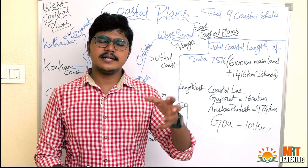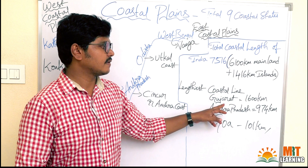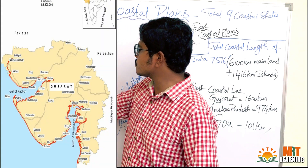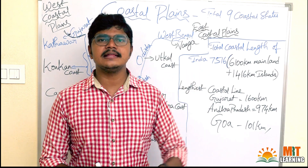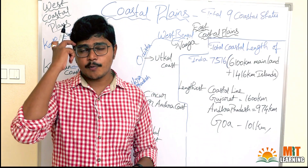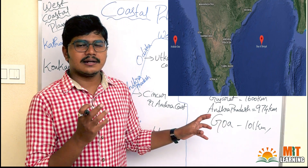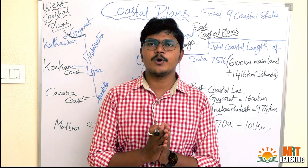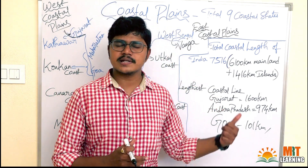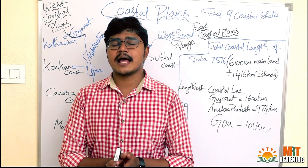Among the nine coastal states, Gujarat has the lengthiest coastal line at 1600 kilometers along the Arabian Sea. The second longest is Andhra Pradesh at 974 kilometers. The smallest coastal length is Goa at just 101 kilometers — which makes sense since Goa is the smallest state. These three facts are important from an exam point of view.